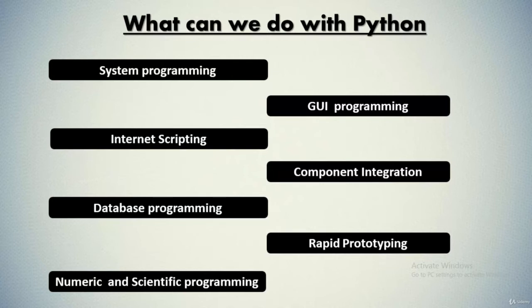The third capability is component integration. Python's ability to be extended by and embedded in C and C++ systems makes it useful as a flexible glue language for scripting the behavior of other systems and components. For instance, integrating a C library into Python enables Python to test and launch the library's components, and embedding Python in a product enables on-site customizations to be coded without having to recompile the entire system.